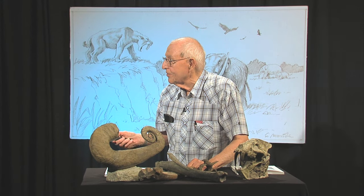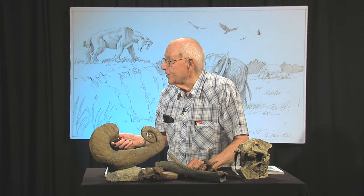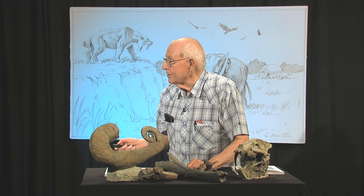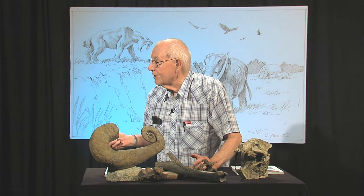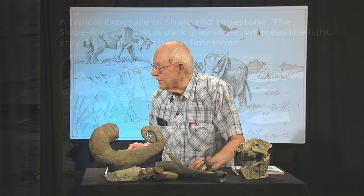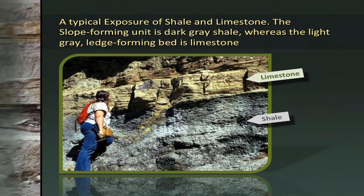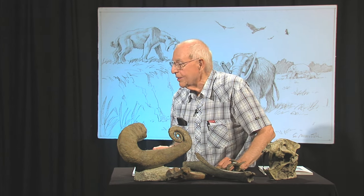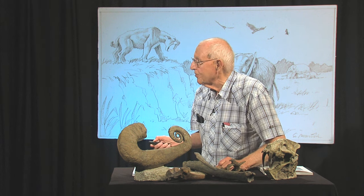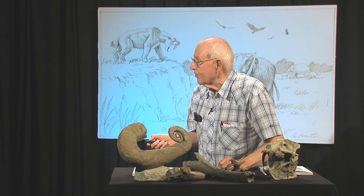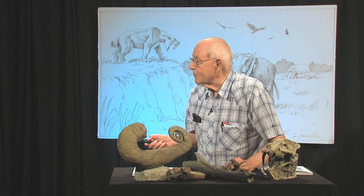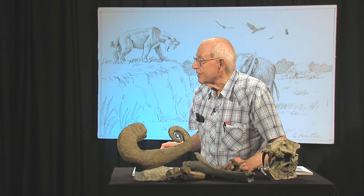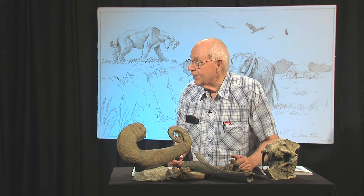These rocks underlie the greater Kansas City area like pages in a book. They're everywhere except where they've been eroded away by modern-day streams, such as along the Kansas River. We've got two typical types of rocks: limestone, which usually forms ledges and is light gray, and shale, which is usually dark gray but typically covered by vegetation and forms slopes. Sometimes you can also find a coal bed or some sandstone. These two major rock types that underlie the greater Kansas City area are called the bedrock.